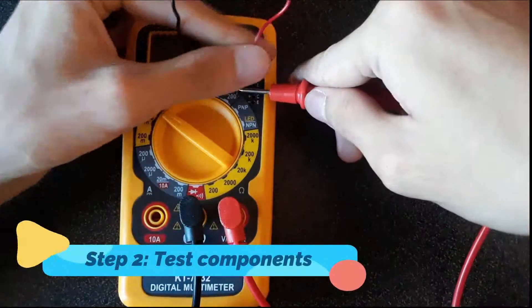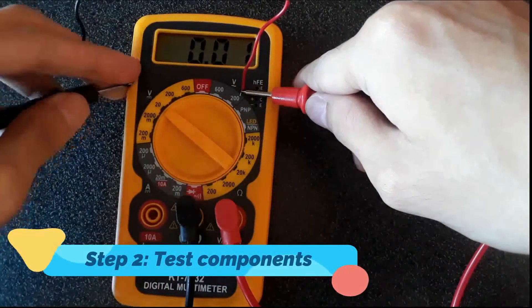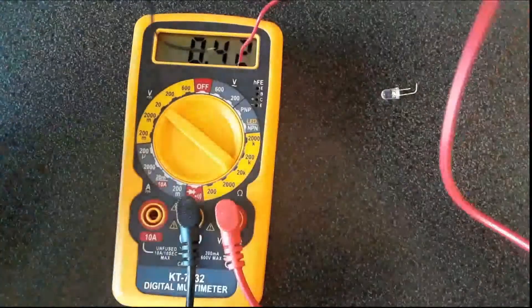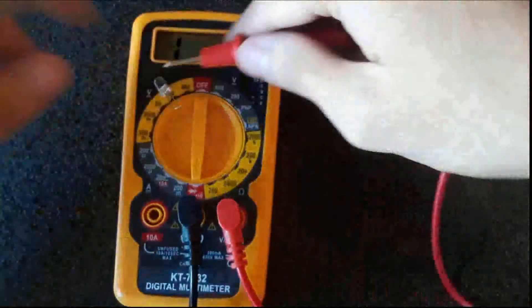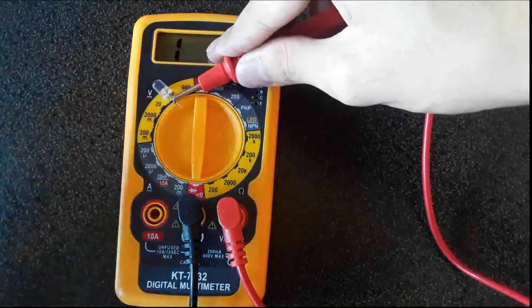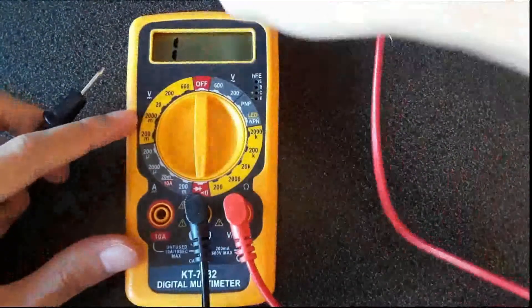Step 2: Let's test the components that we'll be using to make sure that they are working properly. I'll be using a 9V battery, a 470 ohm resistor, and an LED.